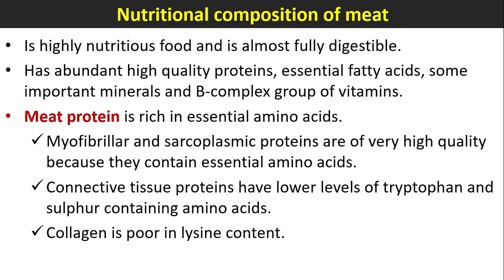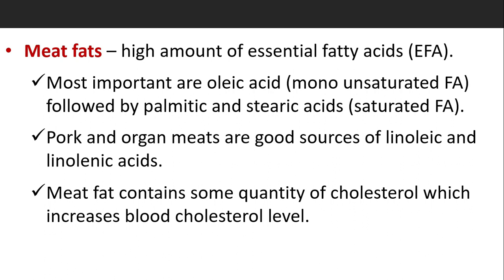Nutritional composition of meat: Meat is a highly nutritious food, almost fully digestible, with abundant high-quality proteins, essential fatty acids, important minerals, and B complex vitamins. Meat protein is rich in essential amino acids. Myofibrillar and sarcoplasmic proteins are of very high quality. Connective tissue proteins have lower levels of tryptophan and sulfur-containing amino acids. Collagen is poor in lysine content.